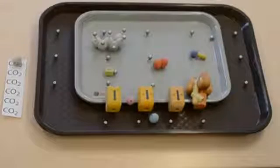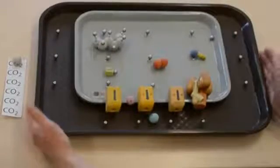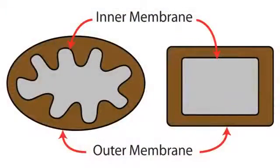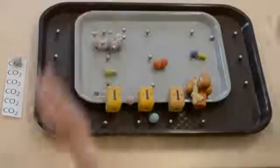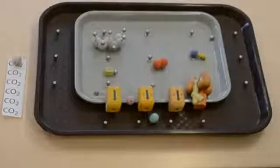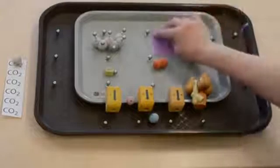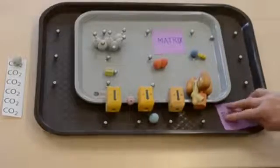So let's see how this happens. First of all, this gray tray represents the inner membrane of the mitochondrion. The brown tray represents the outer membrane of the mitochondrion. One can imagine that this is like a balloon inside of another balloon, and we've sliced right through both of those balloons. The space defined by the inner membrane is the matrix, and the space between the membranes is the intermembrane space.